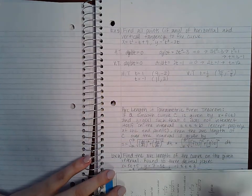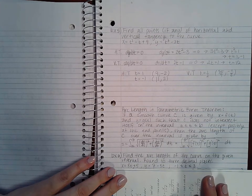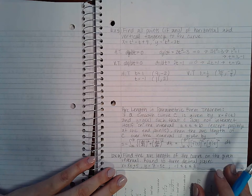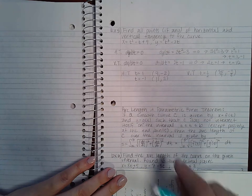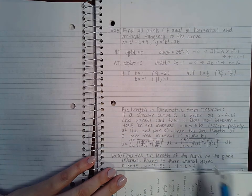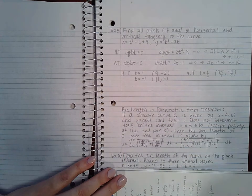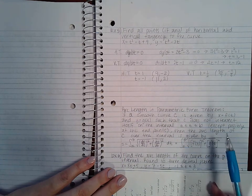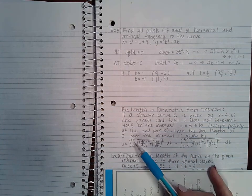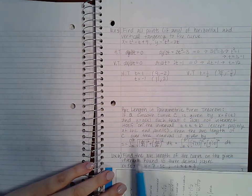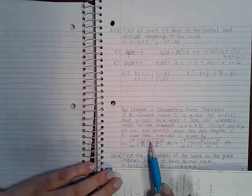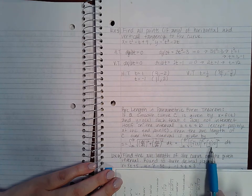Now here is a formula. They say arc length in parametric form theorem: if a smooth curve c is given by x equal to f of t and y equal to g of t such that c does not intersect itself on the interval between a and b except possibly at the endpoints. You don't want things looping on themselves when finding arc length. Then the arc length over the interval is given by the integral from a to b of the square root of dx dt squared plus dy dt squared.